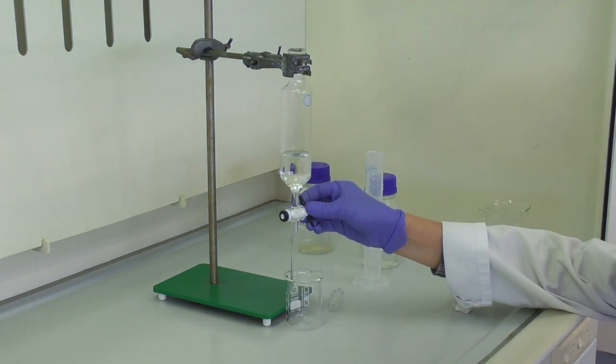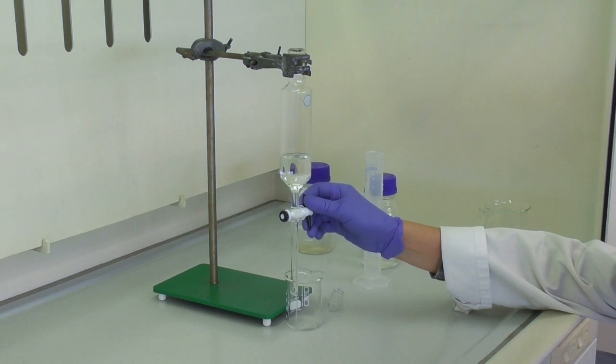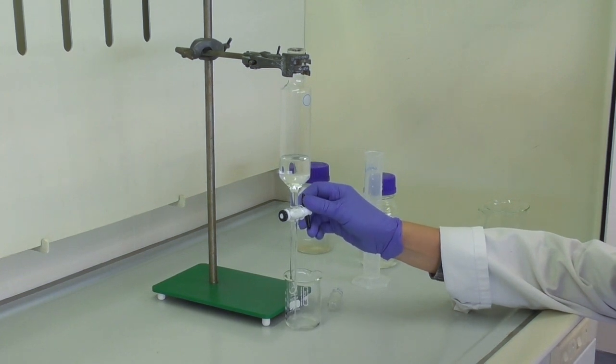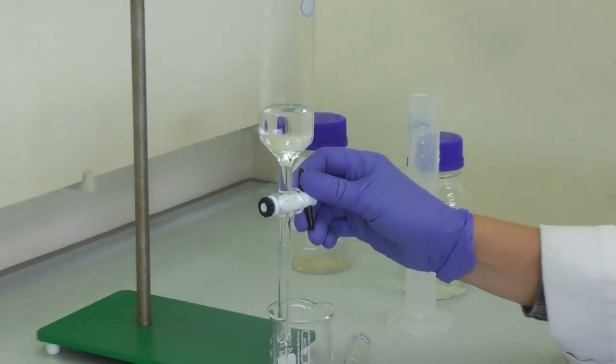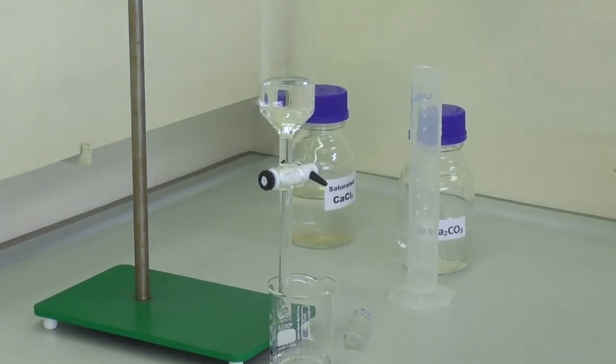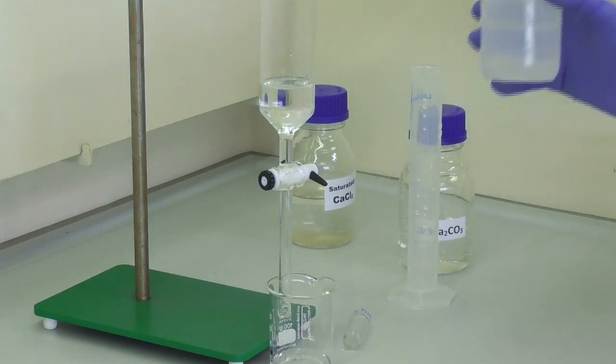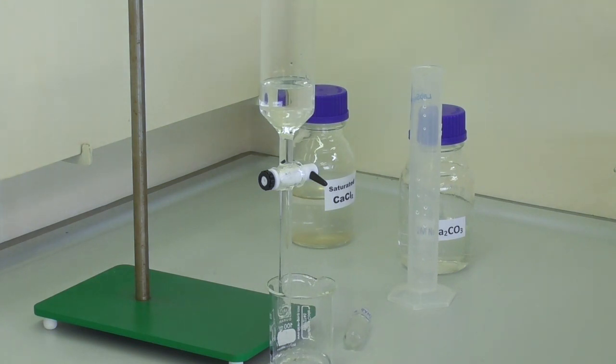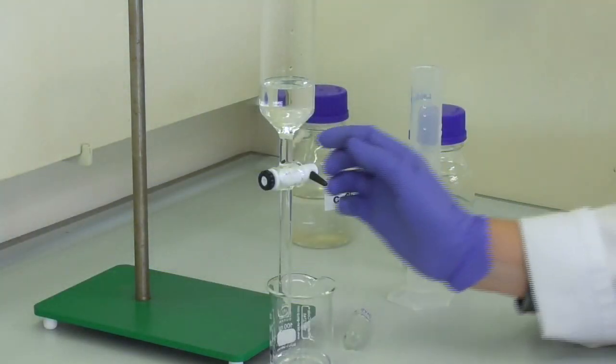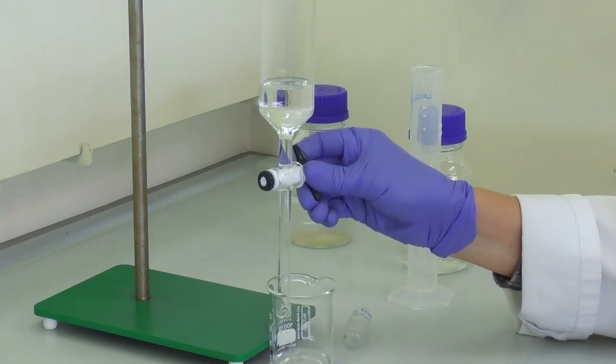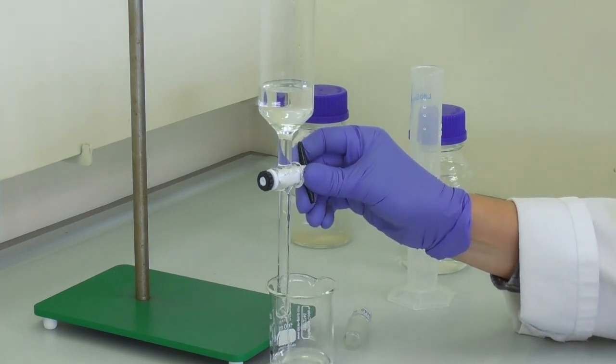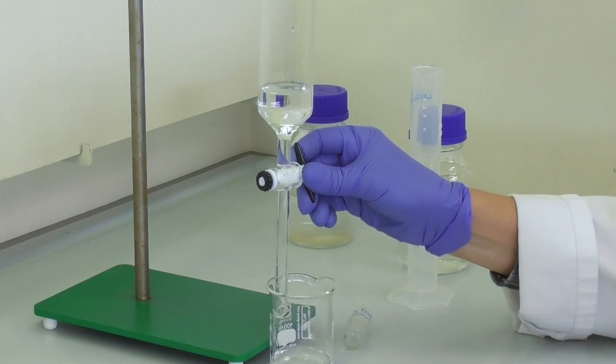We clamp the funnel and drain the aqueous layer. Sometimes it's hard to see where the interface between the two layers is. At that point, we can add a few drops of water which will make it easier to see where the aqueous phase ends, and then we can complete draining the aqueous layer.